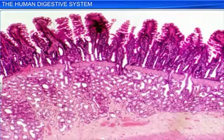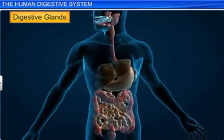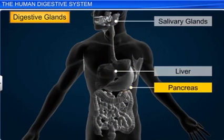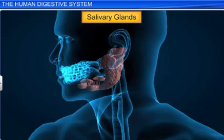Interestingly, the tissues of the alimentary canal wall show modifications by way of thickness, and so on. Apart from the alimentary canal, the digestive system also consists of the salivary glands, liver, and the pancreas, which are collectively known as the digestive glands. The salivary glands, located just outside the oral cavity, secrete salivary juices into the cavity.